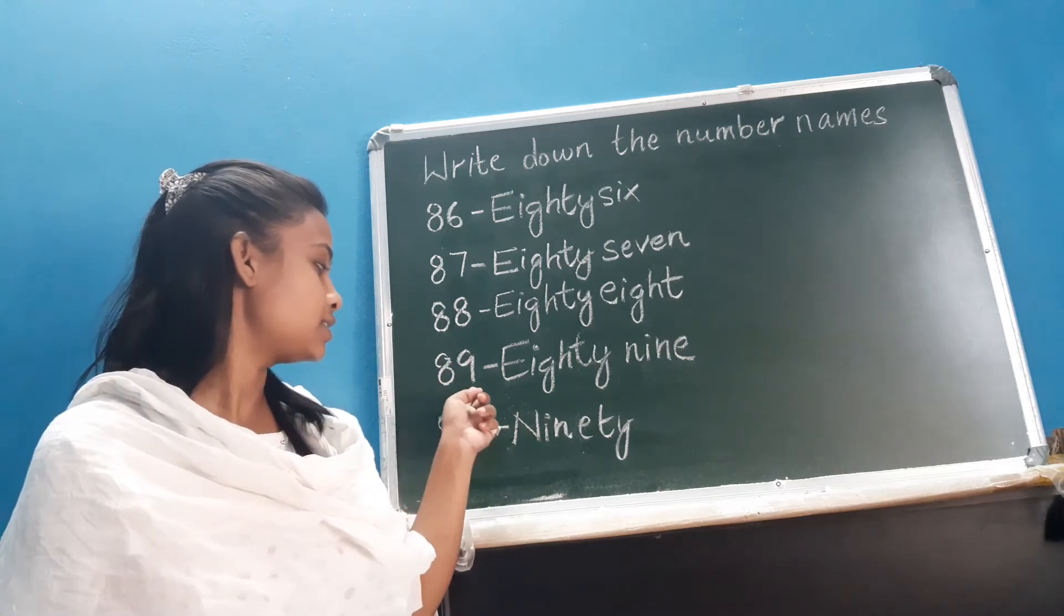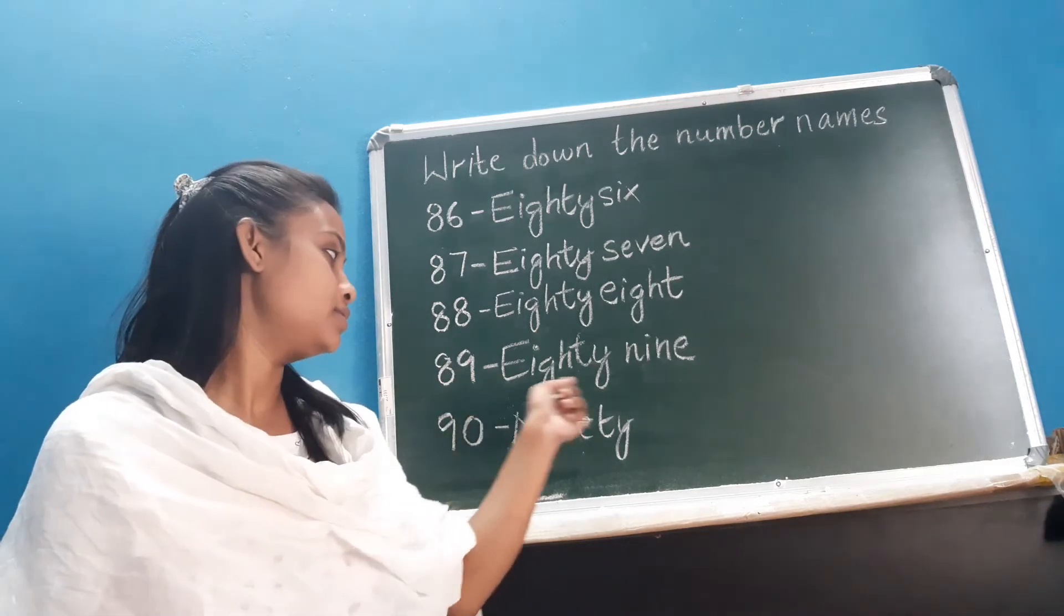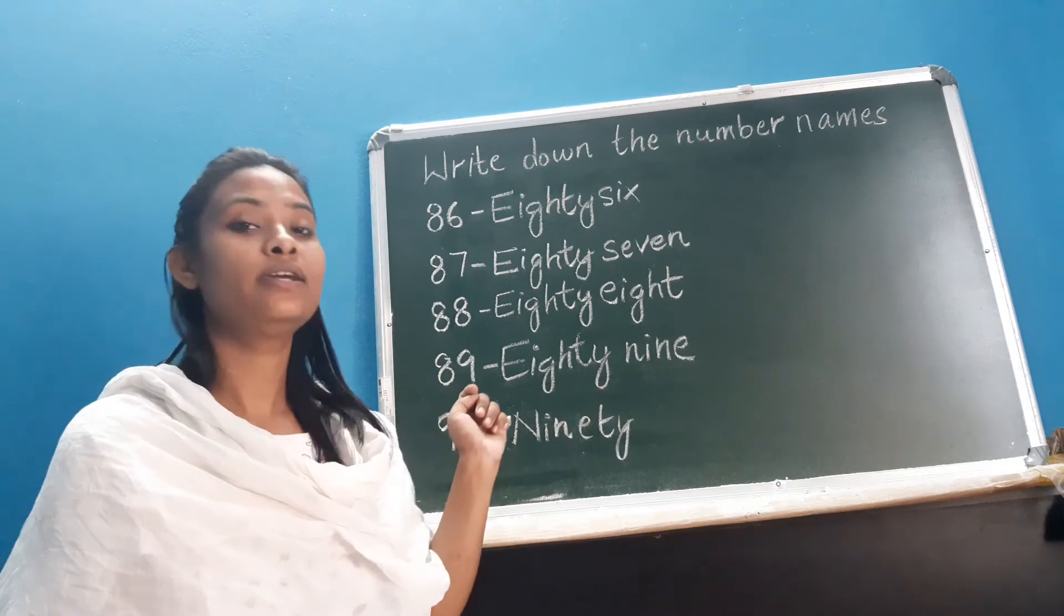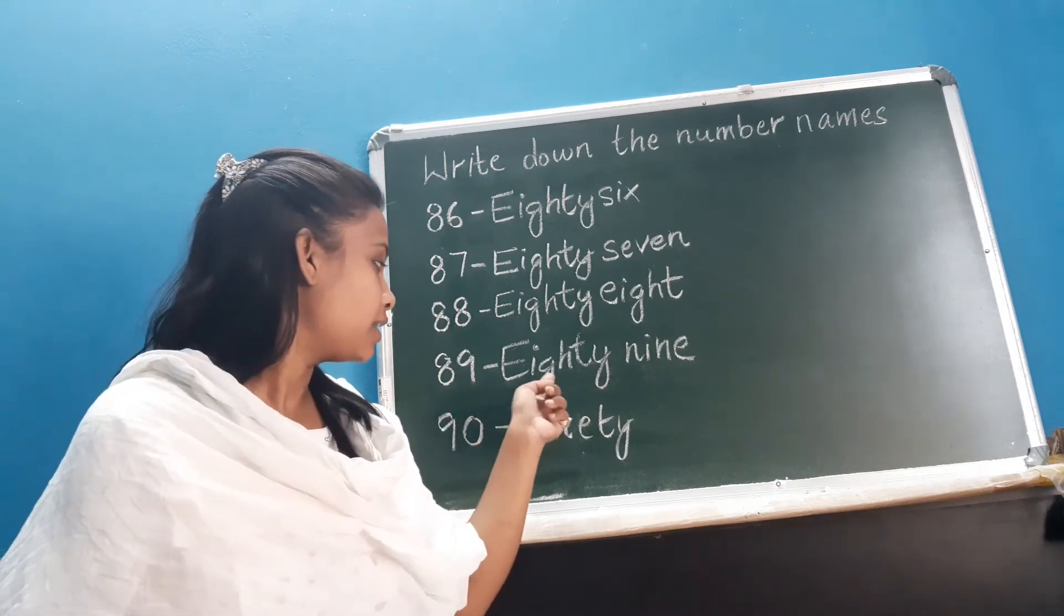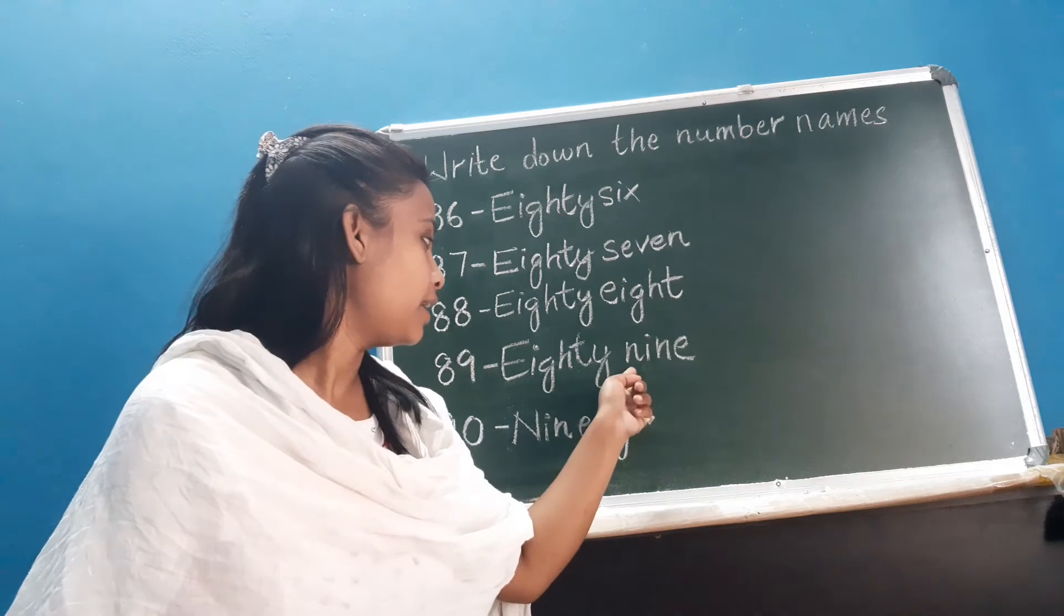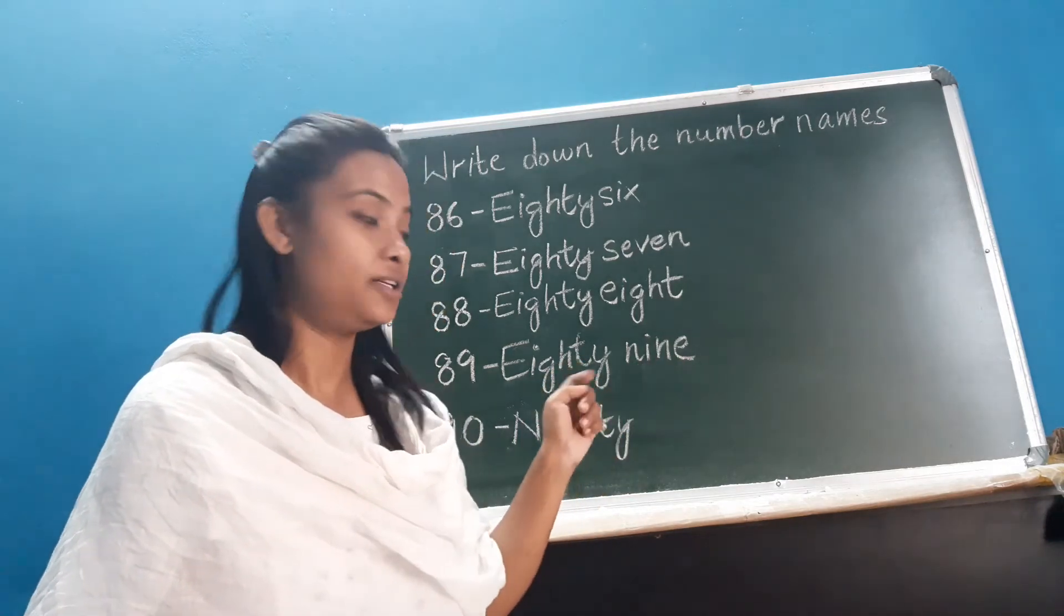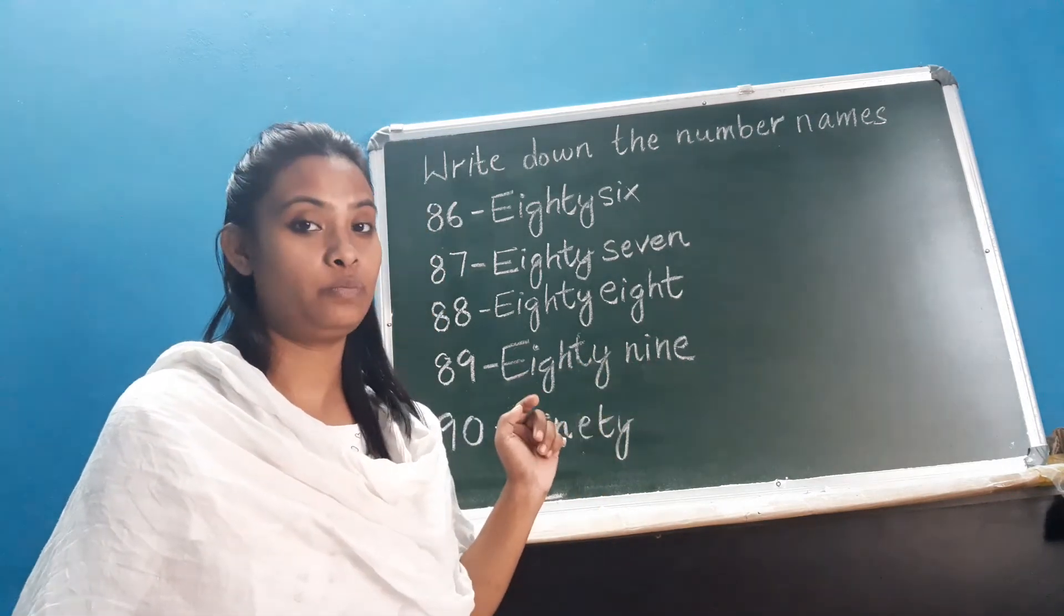Now next, 89, 89. And this is the spelling of 89. E, I, G, H, T, Y, N, I, N, E, nine, eighty nine. I repeat.